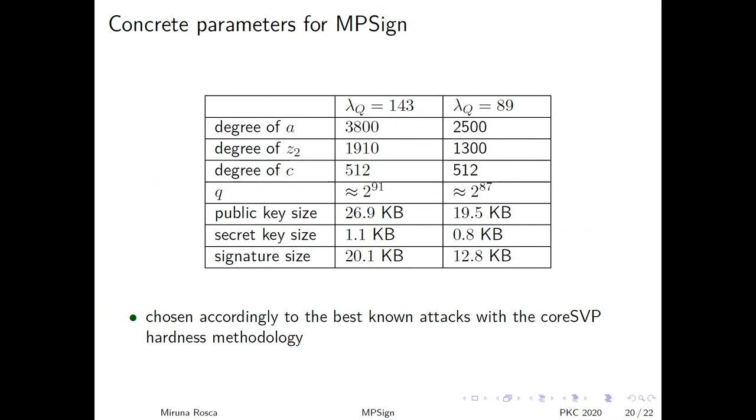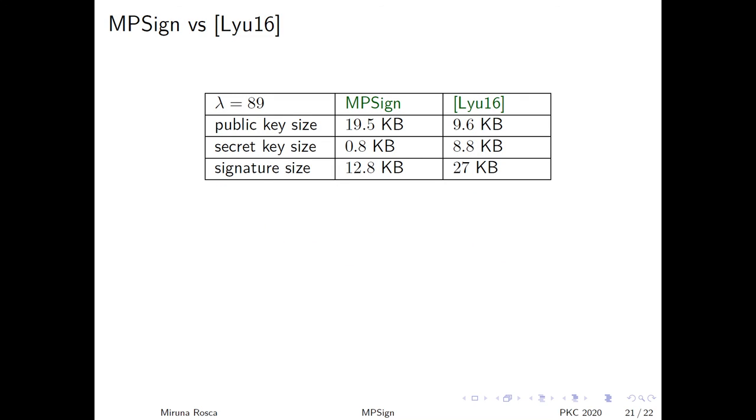Here are some sample parameters for our scheme for different quantum security levels. They are chosen accordingly to the best known attacks with the core SVP hardness methodology. In column 1, the parameters satisfy both classical and quantum level 1 requirements. Compared to Libashevsky's scheme, at the same security level, we managed to shorten the size of the signature by 2 and the size of the secret key by 11 at the cost of doubling the size of the public key. Our security proof is tight, while the security proof of Libashevsky is not.